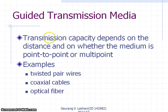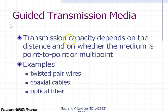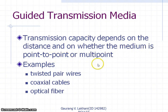Guided transmission media, as the name suggests, use physical guidance in the form of wires — they are not wireless. The transmission capacity depends on the distance and on whether the medium is point-to-point or multipoint. Examples of guided transmission media include twisted pair wires, coaxial cables, and optical fibers.